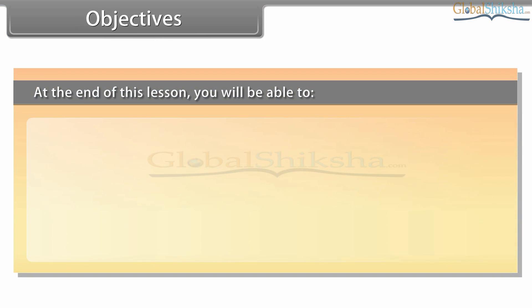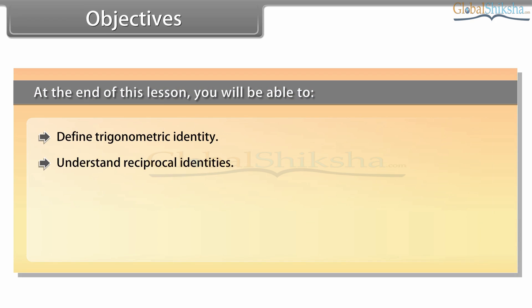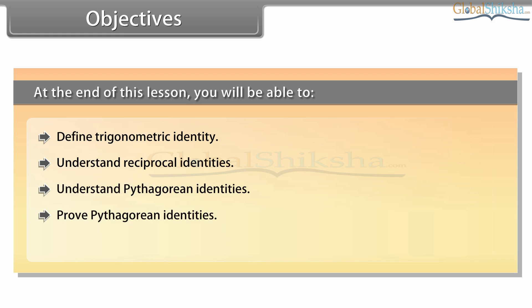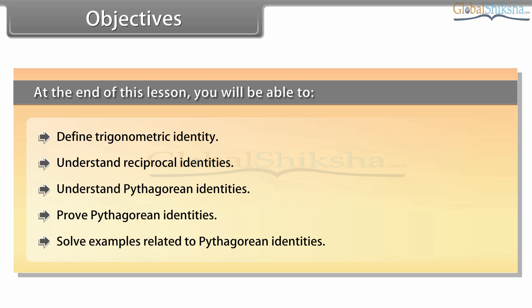Objectives: At the end of this lesson, you will be able to define trigonometric identity, understand reciprocal identities, understand Pythagorean identities, proof Pythagorean identities, and solve examples related to Pythagorean identities.